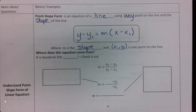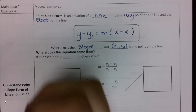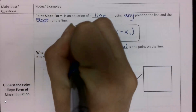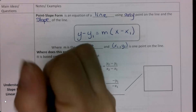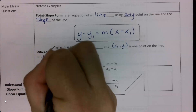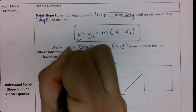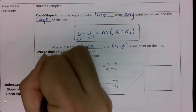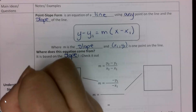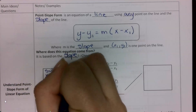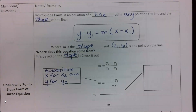This equation is based on slope. The first thing I'm going to do is substitute x for x sub 2 and y for y sub 2. I'm substituting x for x sub 2 and y for y sub 2 in the slope formula.